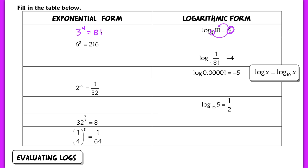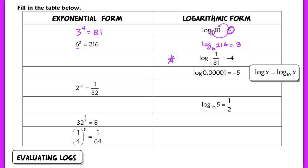When we convert from exponential form to log form, we go a little bit backwards. We start with log, then look at the base. The base here is 6, so we write log base 6. The next thing that comes is the argument — we want to know what number results when we raise the base to some power. That number is 216. So log base 6 of 216 is equal to the exponent 3. Please try the next one on your own and check your answer with the key.